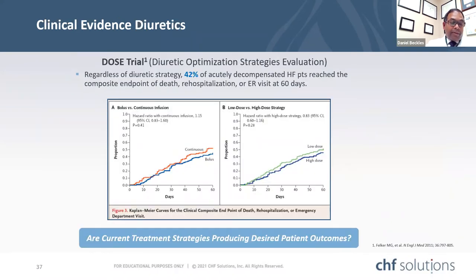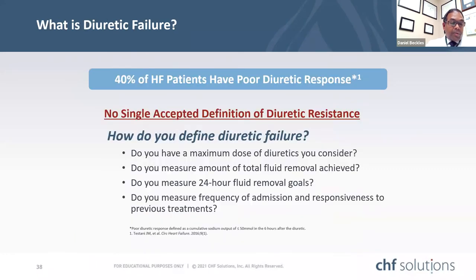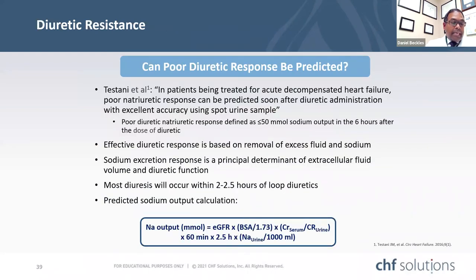Regardless of diuretic therapy, 42% of acutely decompensated heart failure patients reach the composite endpoint of death, rehospitalization, or ER visits at 60 days. Most patients with acute kidney injury will be challenged with diuretic therapy, but studies show 42% of heart failure patients have poor diuretic response. Most diuretic challenges start with 80-100 mg IV Lasix, Bumex 1-2 mg, or Torsemide 5-10 mg, and if there is no response within 2 hours, diuretic resistance can be anticipated.